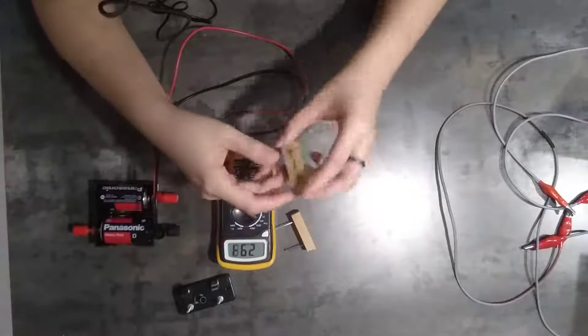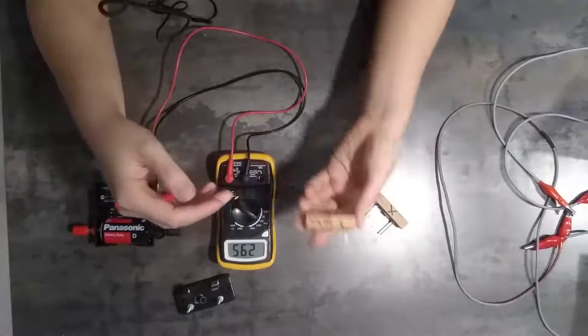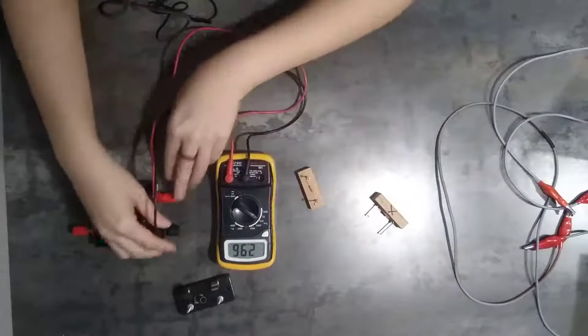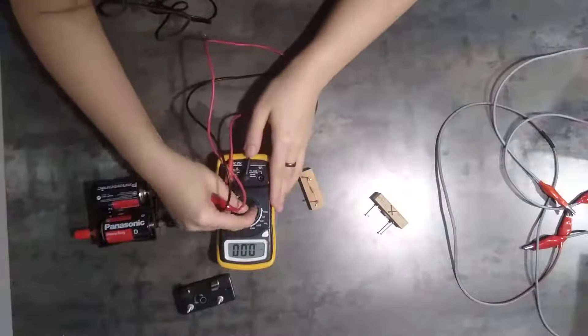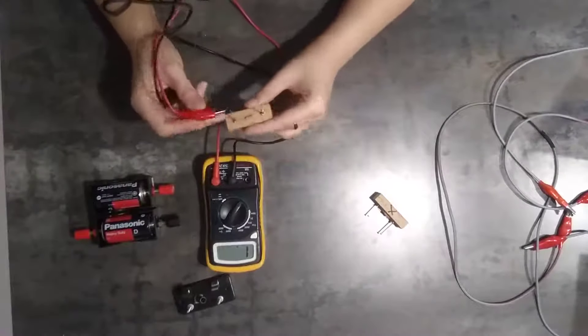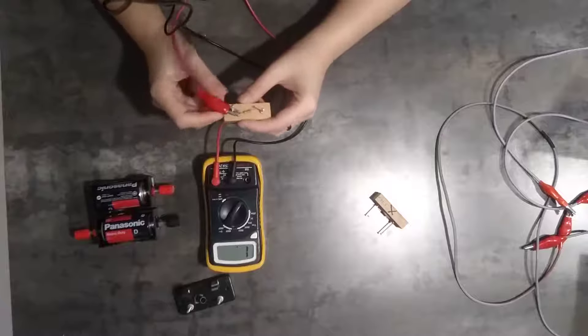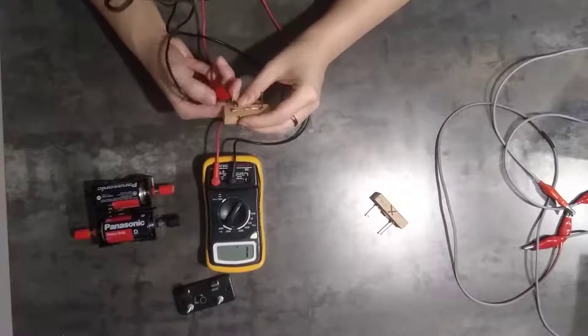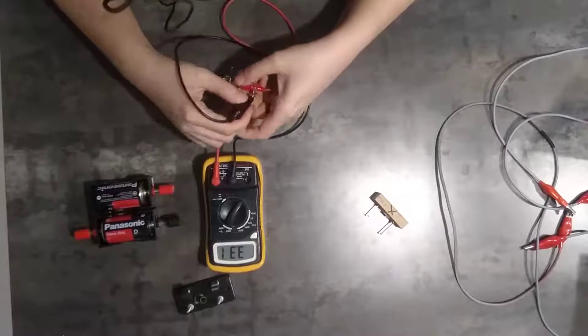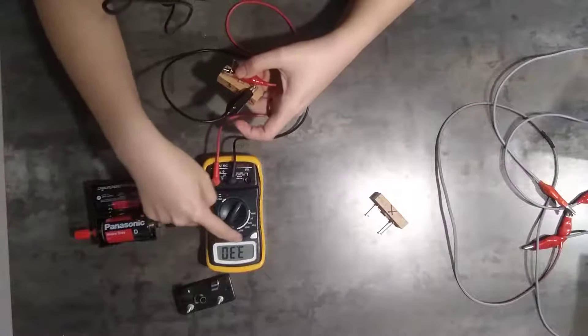For example, if I want to measure this 3.3 kilo ohm resistor, I'm going to kilo, 3.3 kilo. So I can deal with 20k. And if I connect, oh, this one's quite loose, but I will try. So if I connect both of these, I should get 3.3. 3.3.